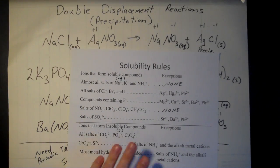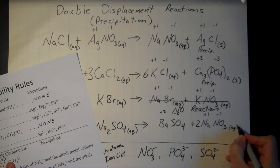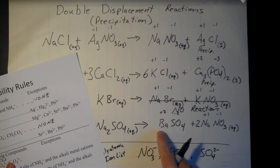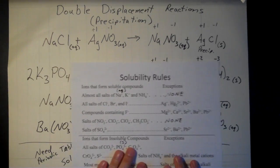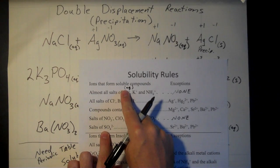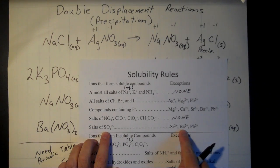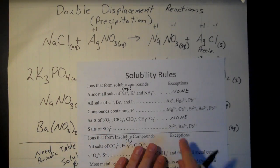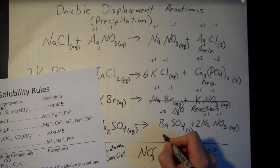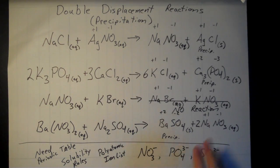Applying solubility rules: sodium in NaNO₃ means it's automatically aqueous. For BaSO₄, sulfate is usually aqueous, but barium is listed as an exception — so BaSO₄ is the precipitate. That's how you complete double displacement reactions — it's not always the first or second compound that precipitates, so you have to check the rules carefully each time.